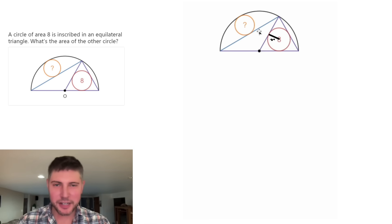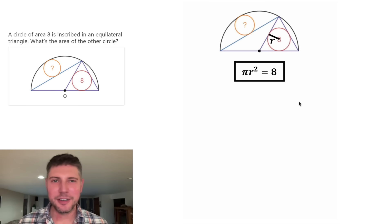For the first step, let's look at this radius and let's call it r. The area of a circle is π r squared. And since the area of this circle is eight, π r squared is going to equal eight. This looks important. Let's put a box around it.